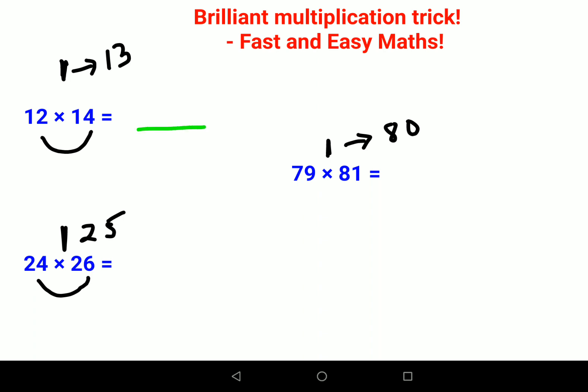To get your answer, all you have to do is just square this and subtract one from it. So 13 square is 169 minus 1, which gives you 168.